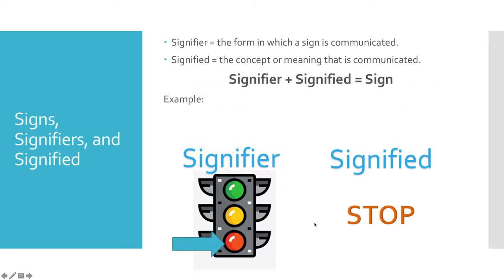Signs are made up of two components. The signifier refers to the form in which the sign is communicated — so this might be an image, spoken or written word — and the signified is the concept that is being communicated. So in this example that you see here, the signifier would be the red light, which signifies, and the signified would be to stop. So we take the physical object of the red light and we associate some sort of commonly accepted meaning to that signifier.